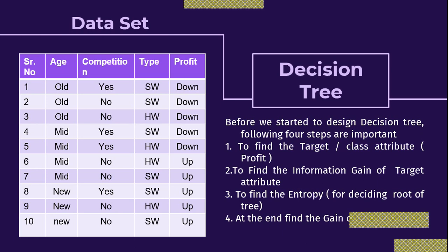Once you find out your target value, the next step is to find out the information gain — called IG — of the target attribute. In the next stage you have to find out the entropy for defining the root of the tree.